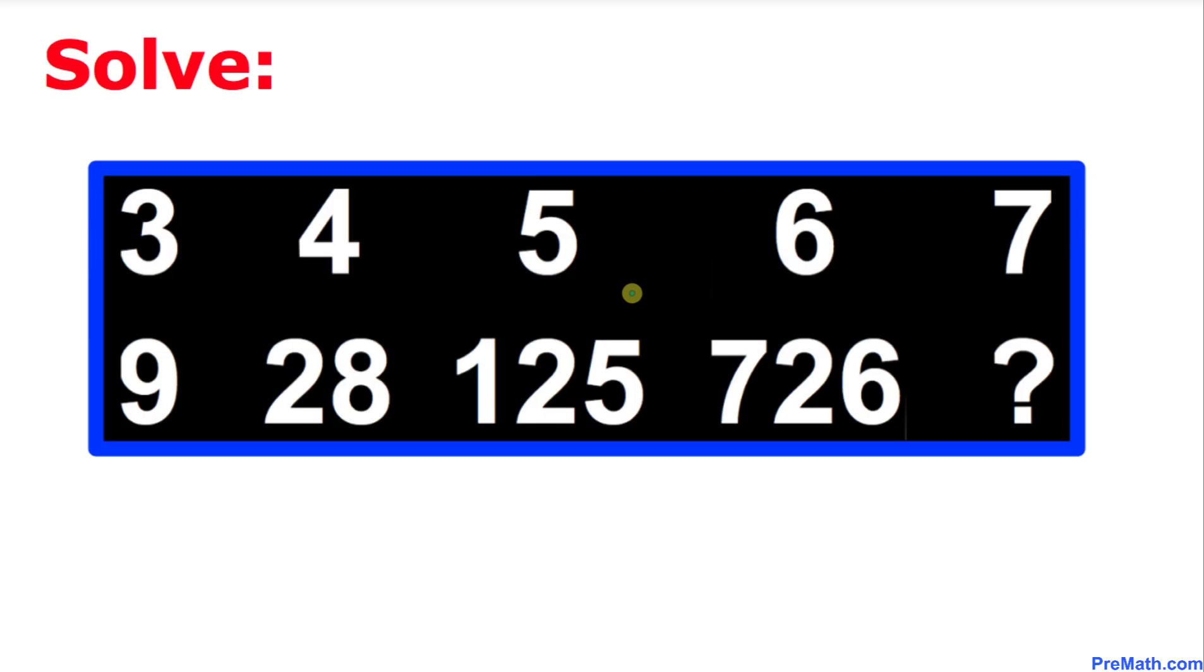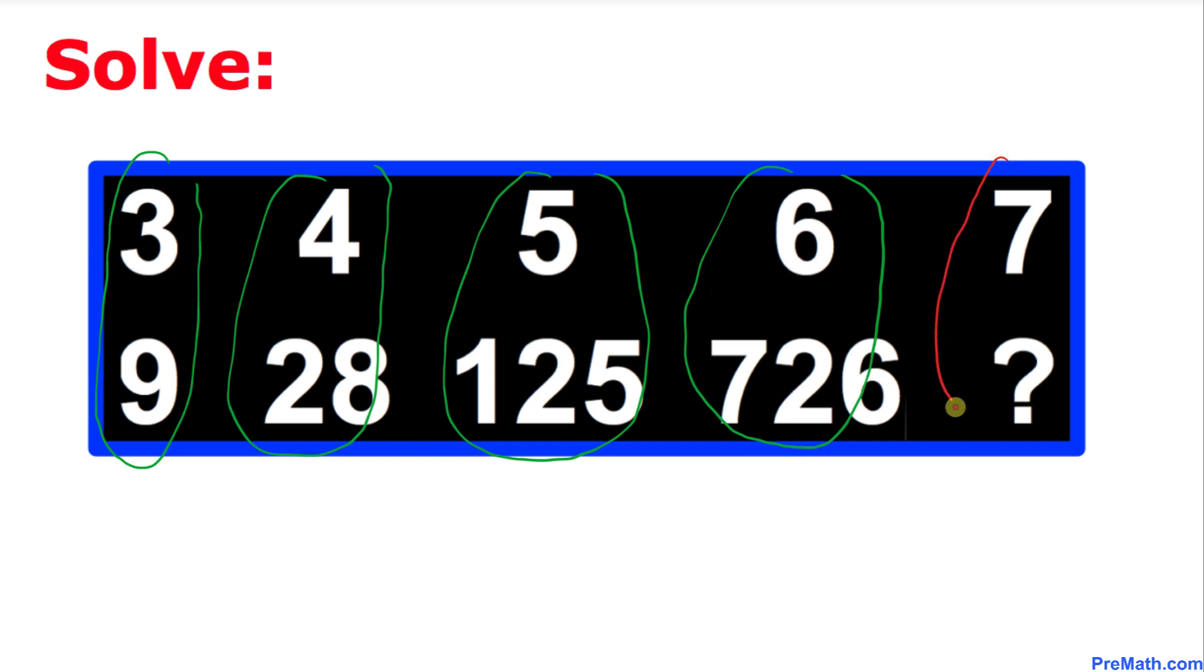Welcome to pre-math. In this video tutorial we are going to solve this given math logic puzzle. Here's the puzzle: 3 corresponds to 9, 4 corresponds to 28, 5 corresponds to 125, 6 corresponds to 726. Now the question mark is what number is going to correspond to 7?